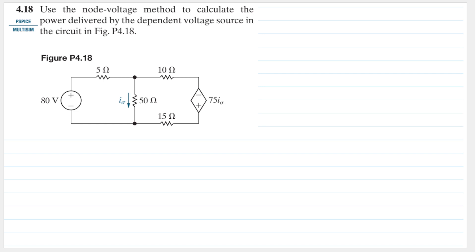Hello, my name is RD and we are going to solve problem 4.18 from the Nielsen and Riddle book. The question is: use the node voltage method to calculate the power delivered by the dependent voltage source. The dependent voltage source is this one here in the circuit in figure T4.18.